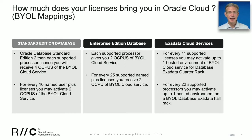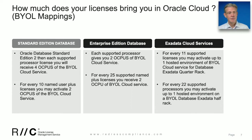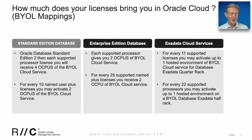As an example here, we'll take a look at Oracle's database Standard Edition and the Enterprise Edition, and we will take a look at Oracle's Exadata Cloud Services. For Standard Edition 2, each processor license will convert into four OCPUs, Oracle's processor metric in the cloud.